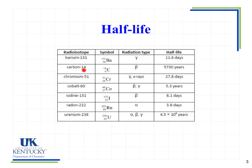Carbon-14, which we'll look at more when we talk about radiocarbon dating, undergoes beta emission and has a half-life of 5,730 years. Iodine-131, which we just looked at, undergoes beta emission and has a half-life of 8.1 days — we rounded it in the previous slide for simplicity.